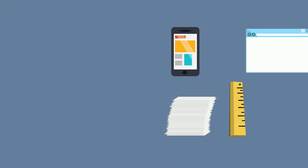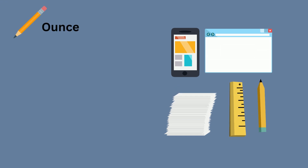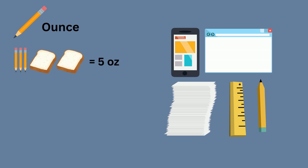There are at least three common units used to measure weight. Up first is the ounce. An ounce weighs roughly what a pencil weighs. A single slice of bread also weighs about an ounce. So if you had three pencils and two slices of bread, you would have roughly five ounces. The abbreviation OZ is used for ounce.